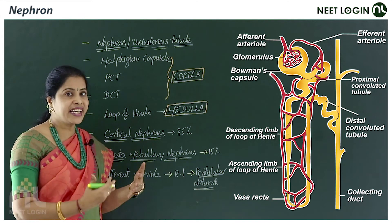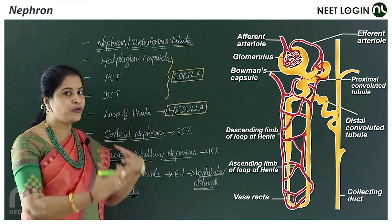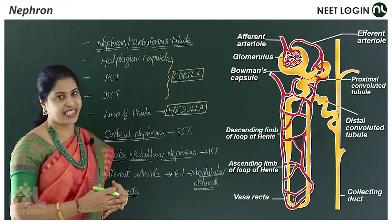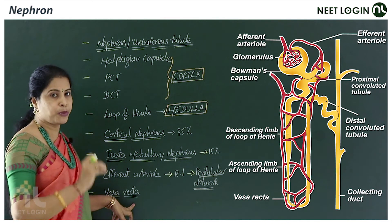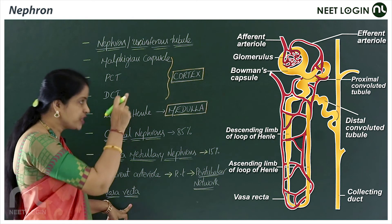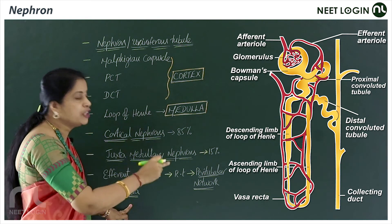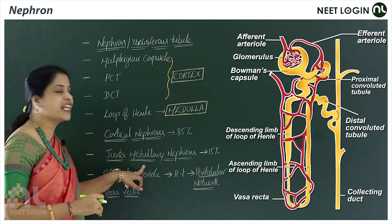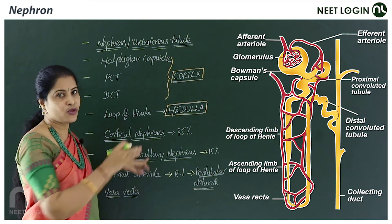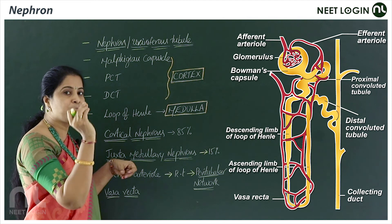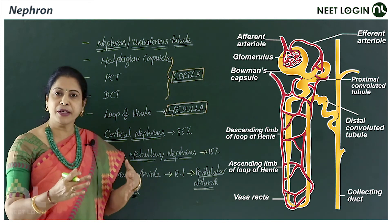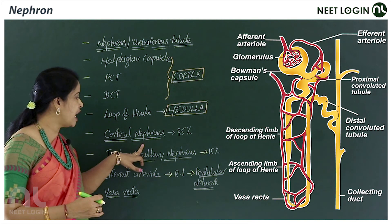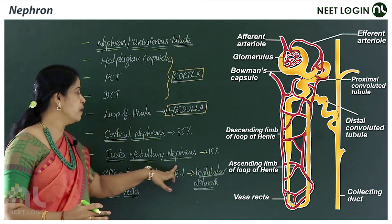The renal artery brings blood rich in urea to the kidneys; the renal vein carries blood with the least amount of urea after filtration and elimination. Regarding vasa recta: it is reduced or absent in cortical nephrons, and well developed in juxtamedullary nephrons. Cortical nephrons have a short Henle's loop in the cortex, while juxtamedullary nephrons have a longer loop extending deep into the medulla.